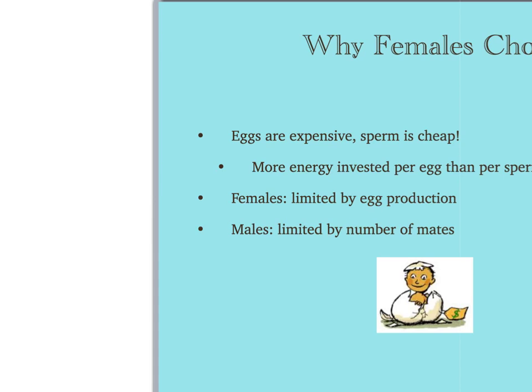Why do females choose? Eggs are often expensive while sperm is cheap — more energy is invested per egg than in sperm. Females are limited by egg production while males are limited by number of mates. This demonstrates how males have little to lose by mating because they can easily mate again. Females are different because of their higher investment in eggs, and for this reason they are really picky.